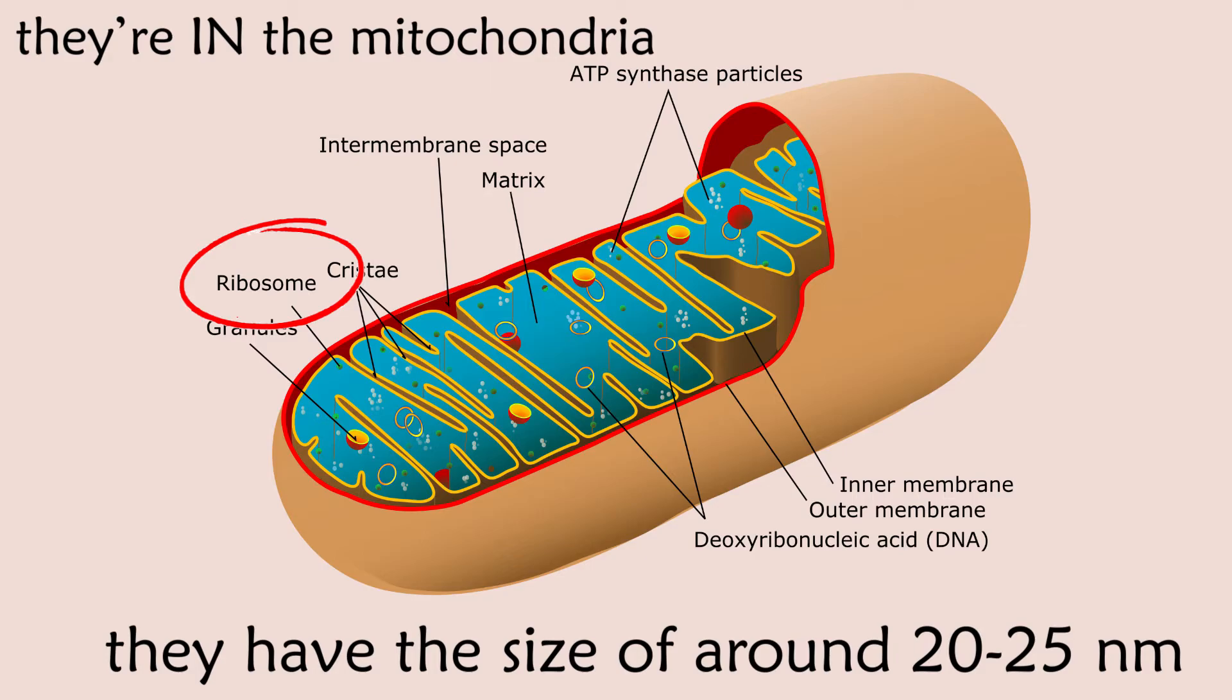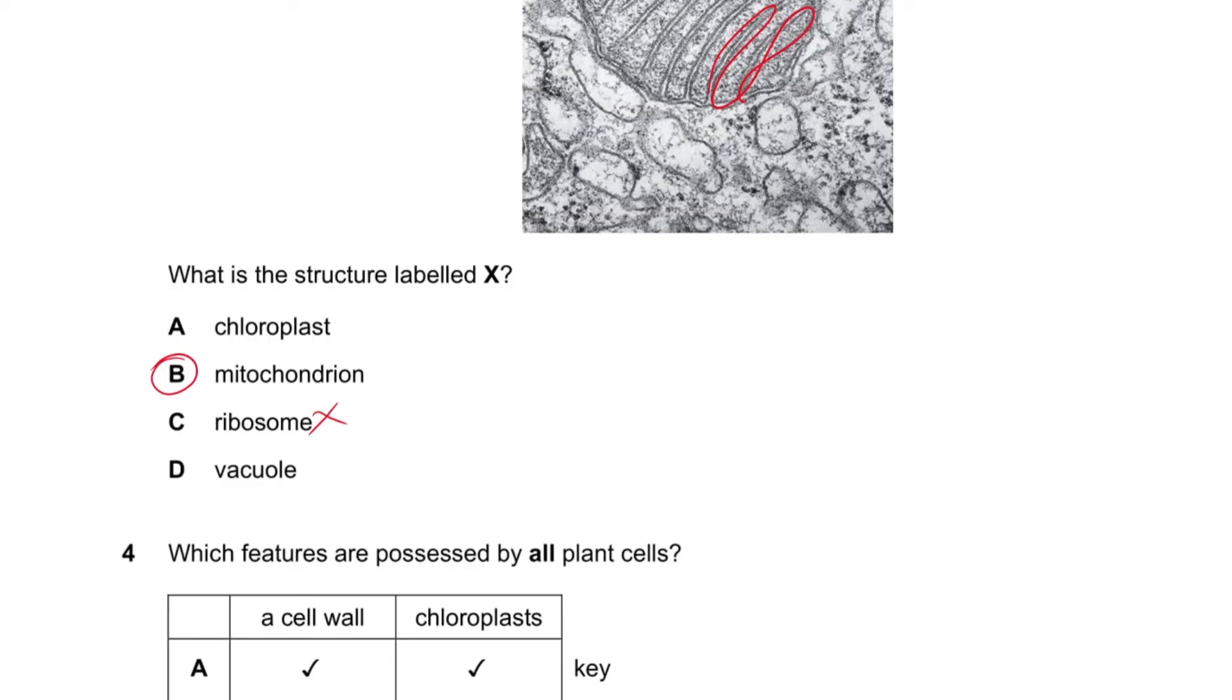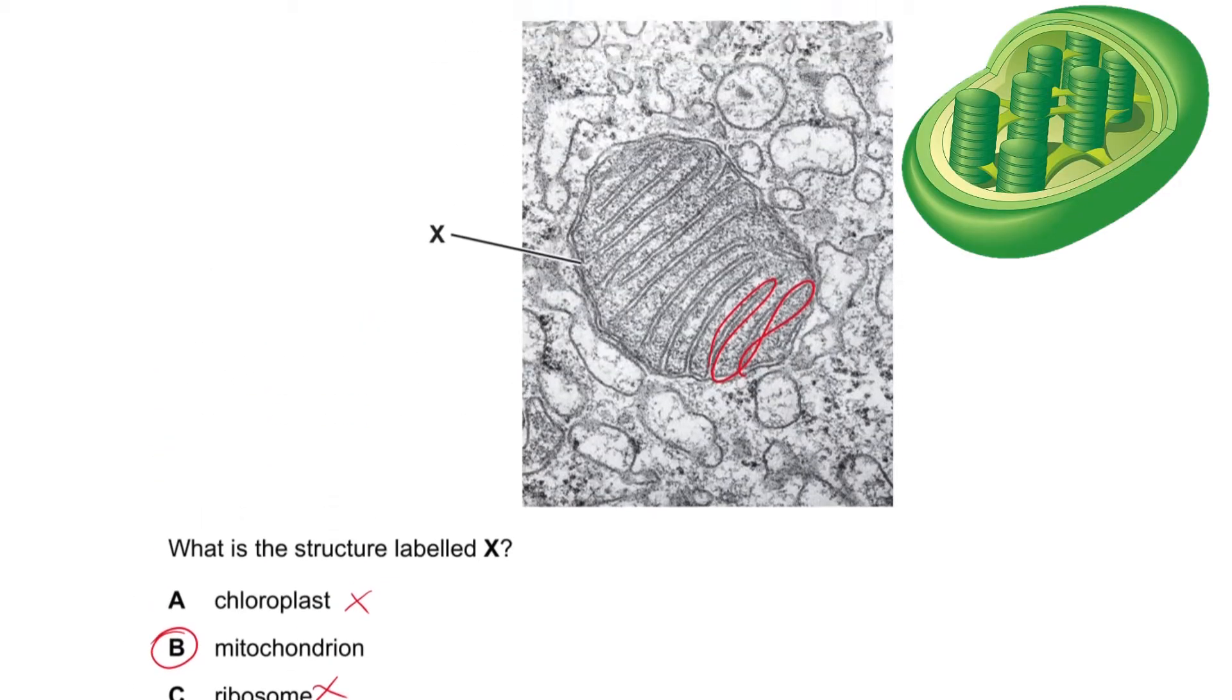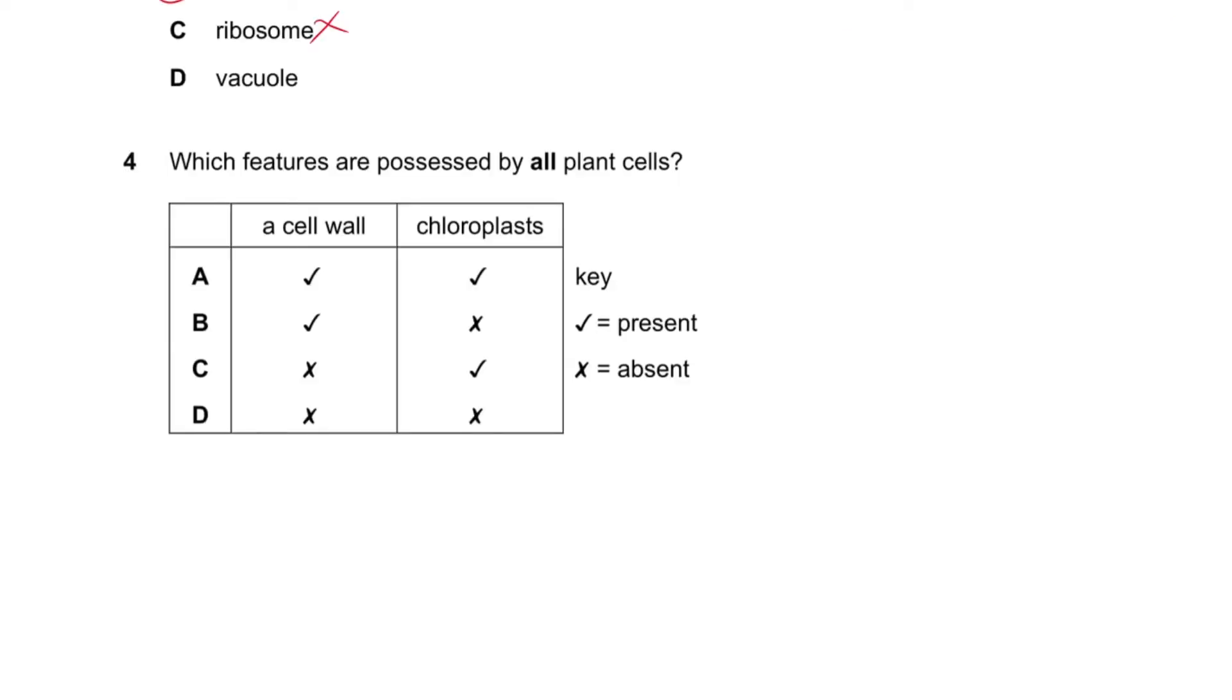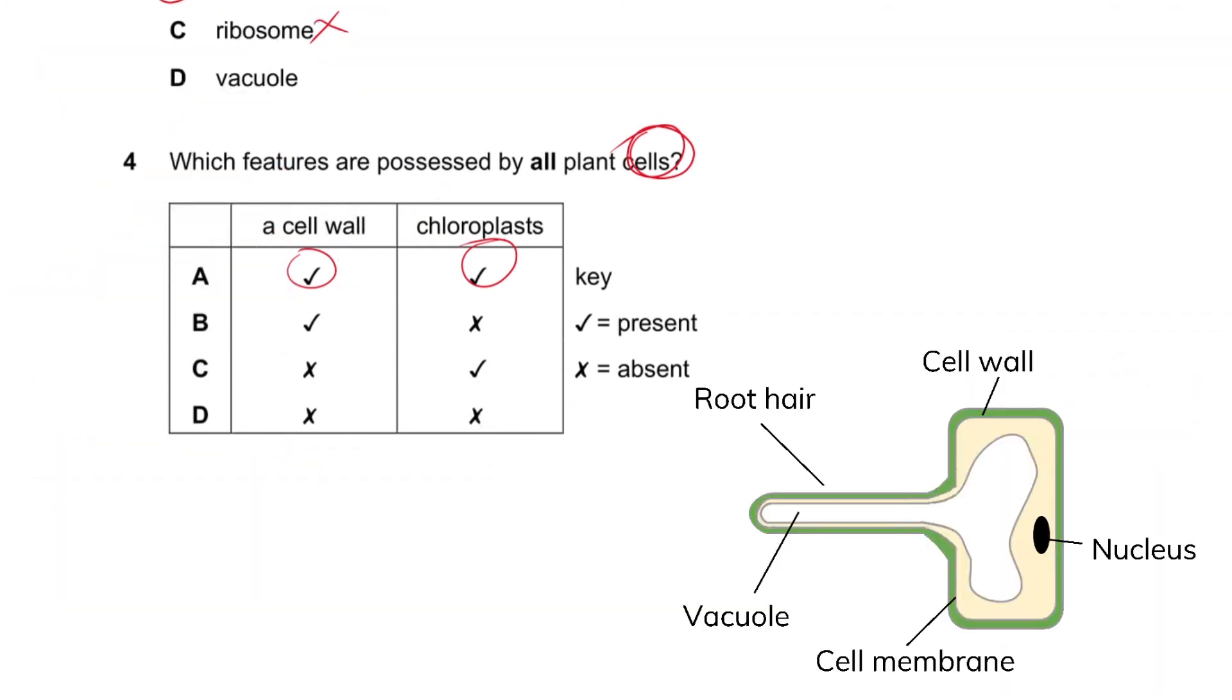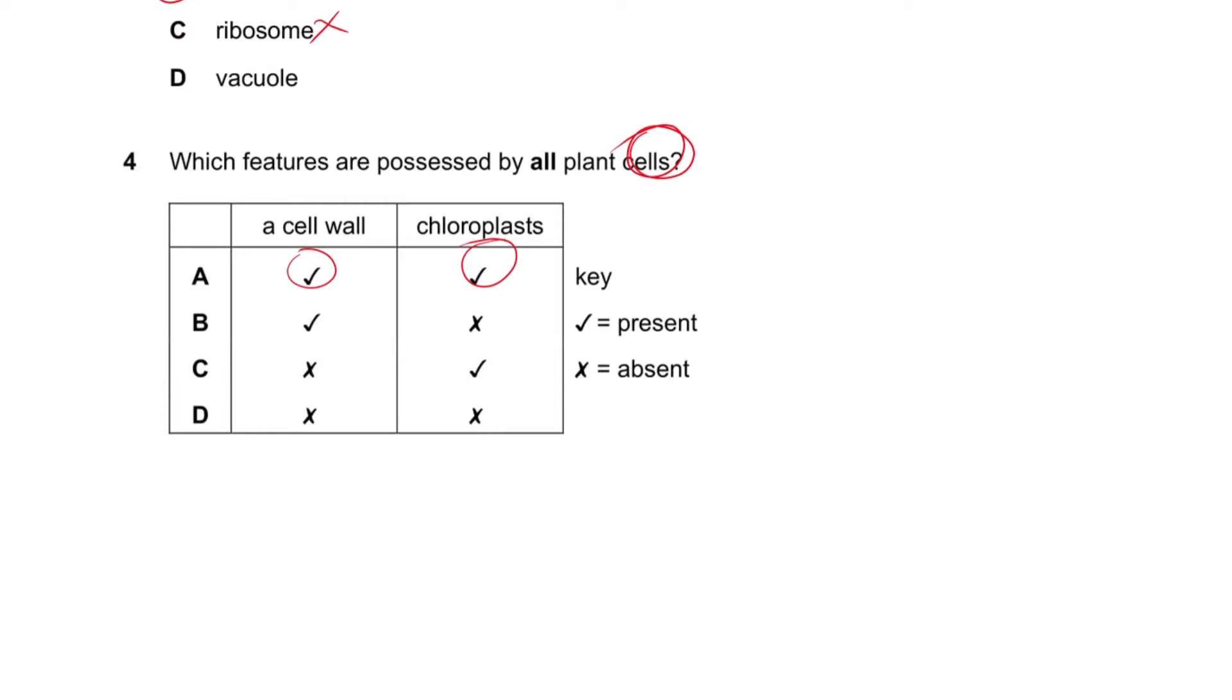Question number four says which features are possessed by all plant cells? In this case a lot of people would just say yes and yes because plant cells all have cell walls and chloroplasts, but this is actually a trick question because if you think about the root hair cell they don't have chloroplasts. So not all of them have chloroplasts but all of them do have cell walls, so the answer is B.